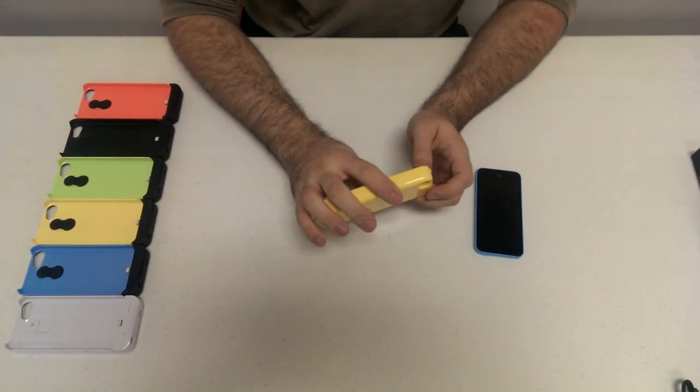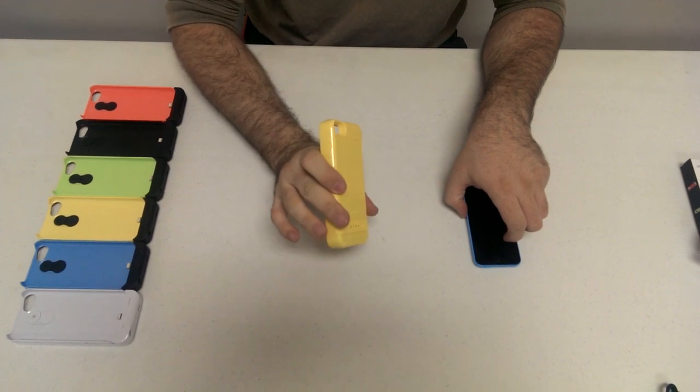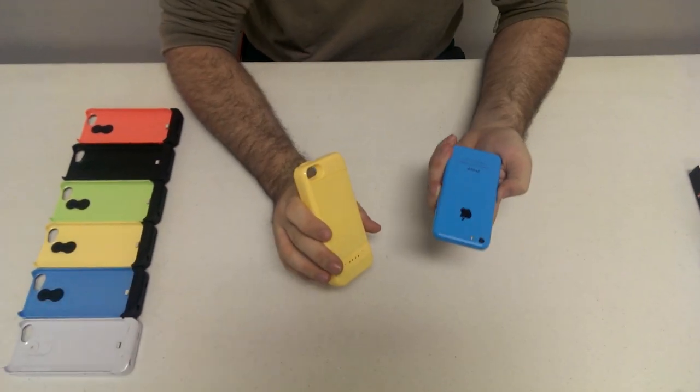Introducing the iBlazing PowerGlider for the iPhone 5C. As you can see, I have a yellow lightning version here and a lovely blue iPhone 5C.